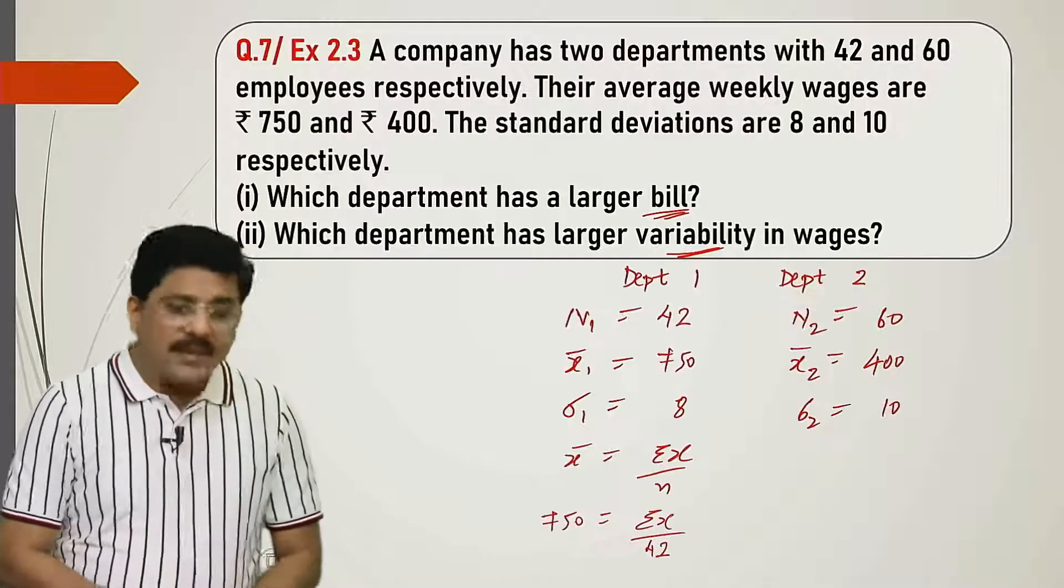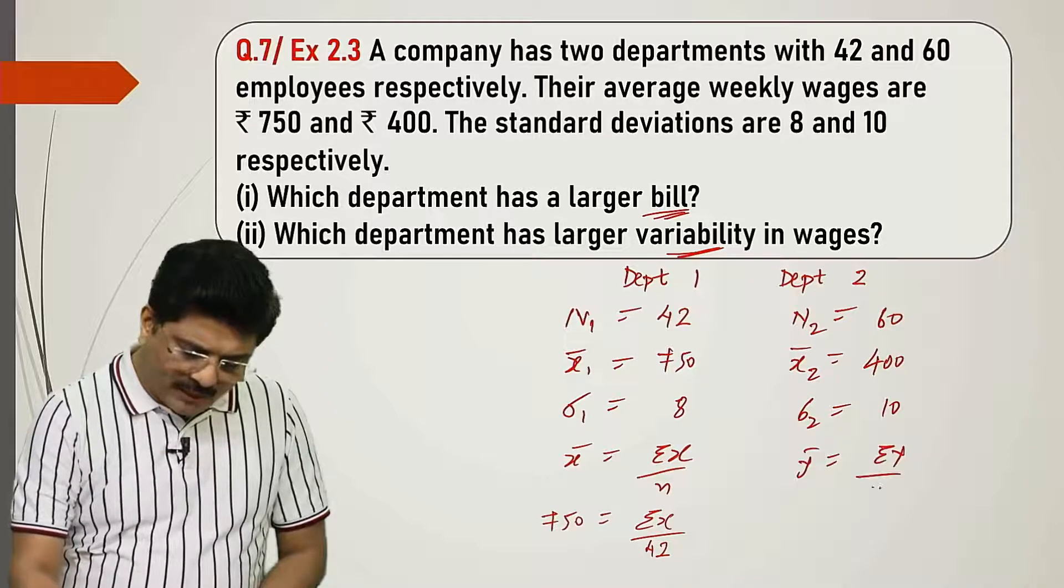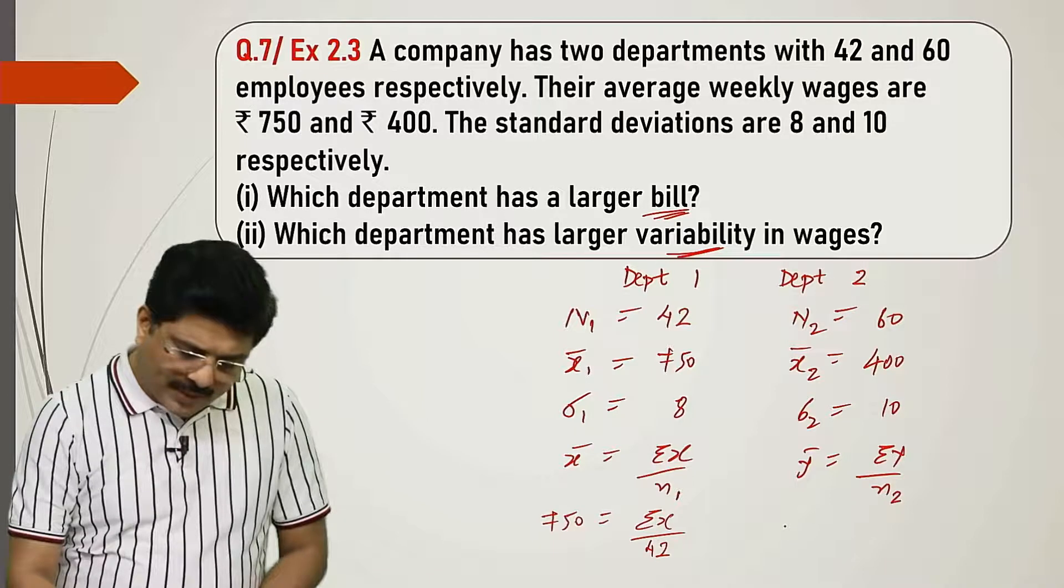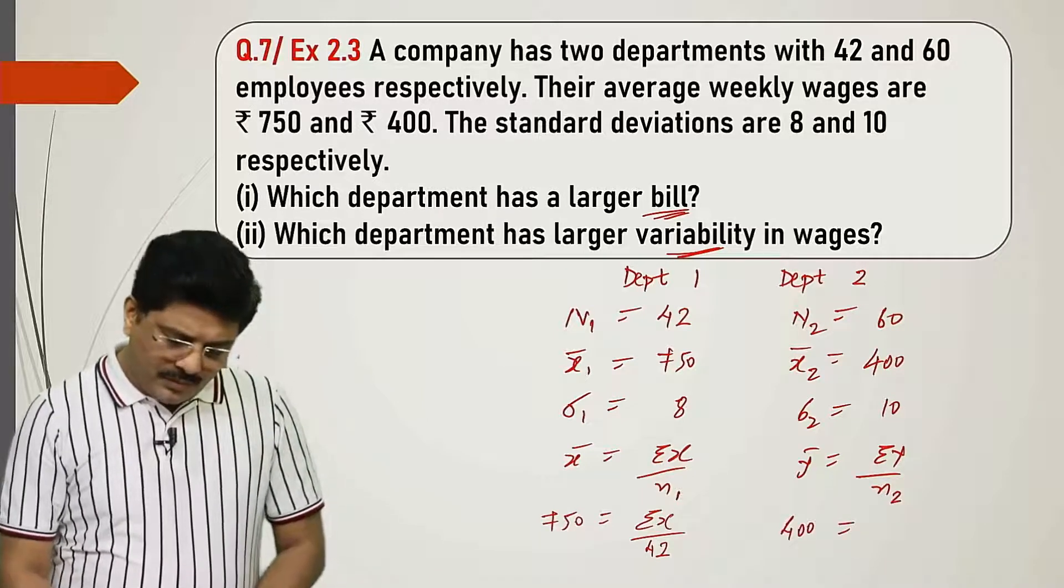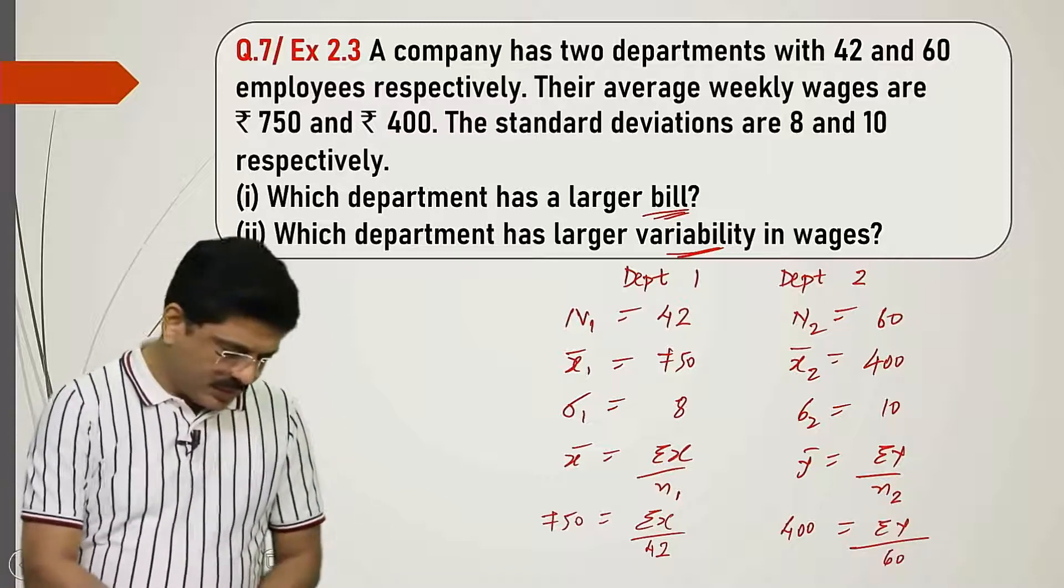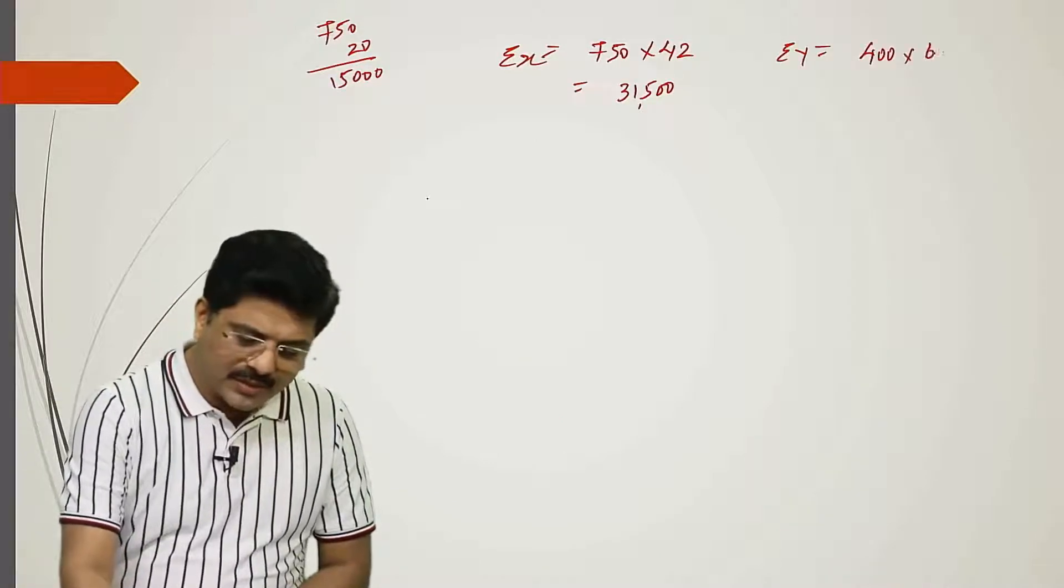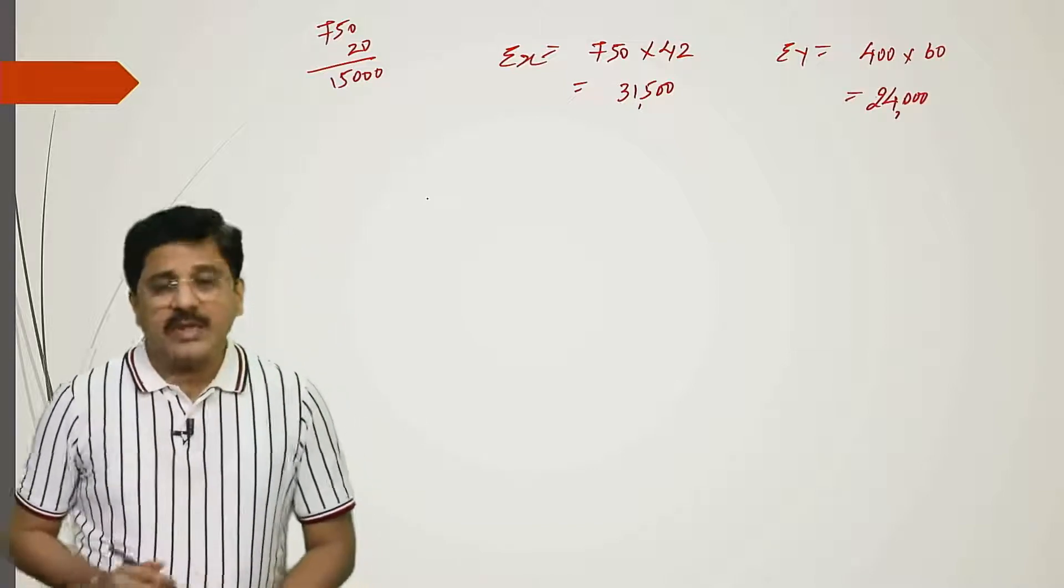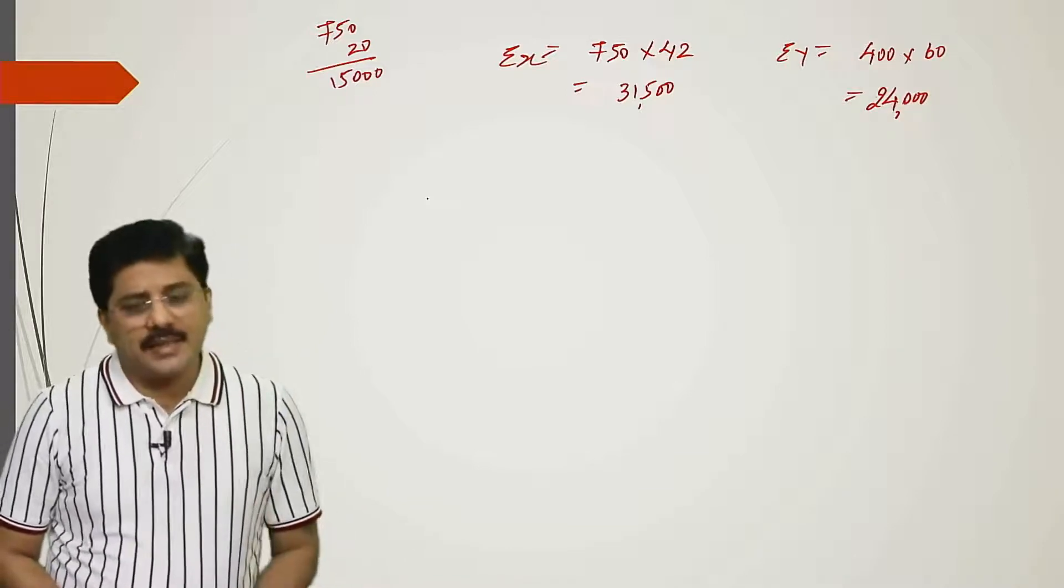Here I'll write y bar. Y bar is summation y upon n. Y bar is 400 equals summation y upon 60 workers. So summation y will be 400 into 60. The answer is 24,000. So the first question's answer: wage bill of department X is more, larger.